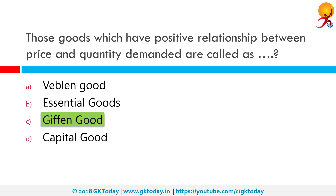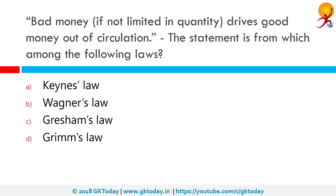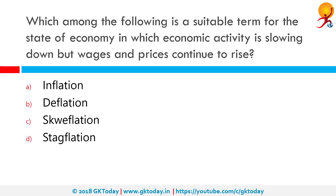Bad money, if not in limited quantity, drives good money out of circulation. This statement is from Gresham's Law. In economics, Gresham's Law is a monetary principle stating that bad money drives out good. If two forms of commodity money in circulation are accepted as having similar face value, the more valuable commodity will gradually disappear from circulation. The law was named in 1860 by Henry Dunning Macleod after Sir Thomas Gresham, an English financier during the Tudor dynasty. It is occasionally also known as the Gresham-Copernicus Law.